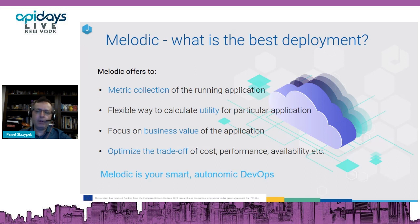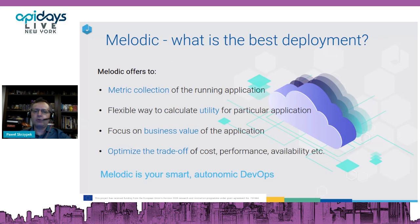We want to keep the cost of the cloud deployment as low as possible. If we want to minimize only one parameter, like cost, then the simplest answer is just not to deploy the application, because cost will be zero — but performance and availability will be zero as well. So typically we need to find a trade-off between cost, performance, and availability. You can treat Melodic as your smart Autonomic DevOps, thanks to the use of the multi-cloud API — all of these operations are done automatically.